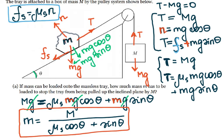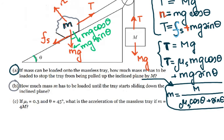Now for part B: how much mass m has to be added until the tray starts sliding down the incline? If the tray is about to slide down, the static friction changes direction — it now points up the incline rather than down. So our equations will look different for this scenario.